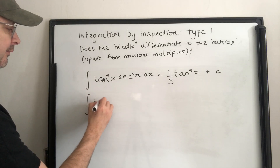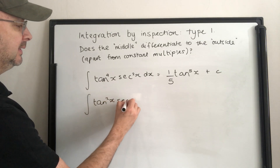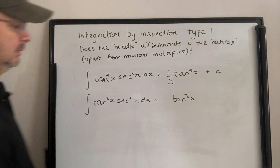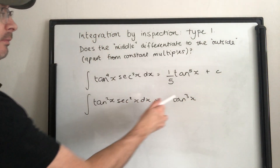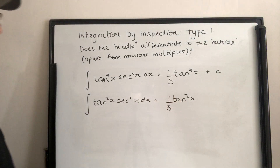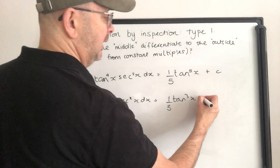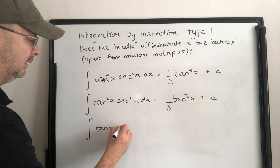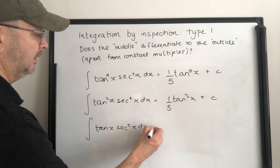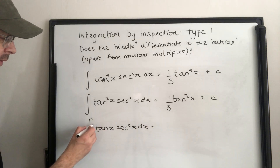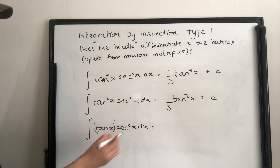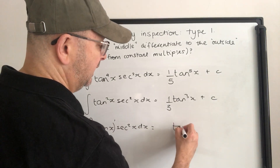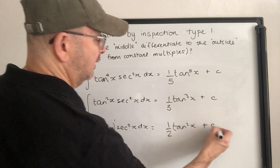A few more. For tan squared x times sec squared x, that would be tan cubed x. The middle differentiates to tan squared. The 3 comes down the front; we don't want it. Multiply by tan x differentiated, which is sec squared x. Answer: one third tan cubed x, plus c. For tan x times sec squared x, we treat tan x as tan to the power of 1. So the answer is one half tan squared x plus c.